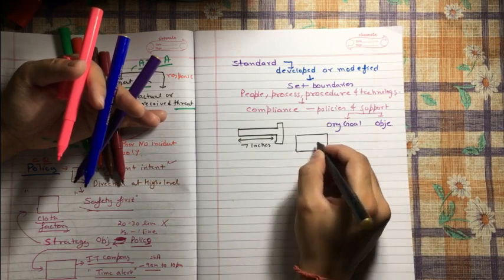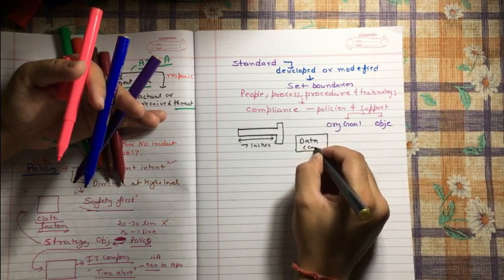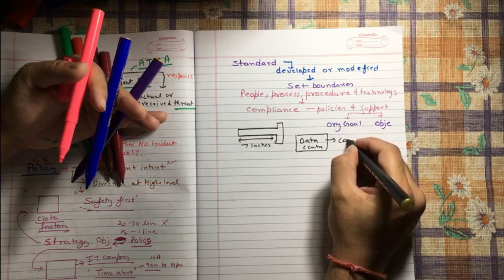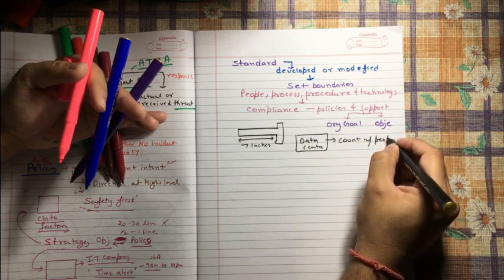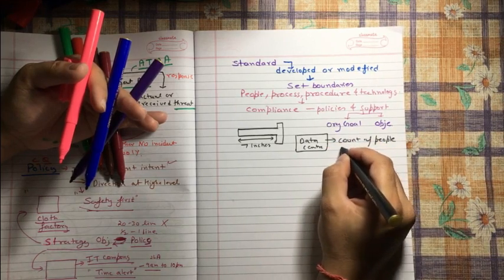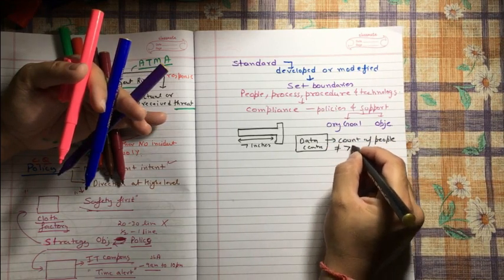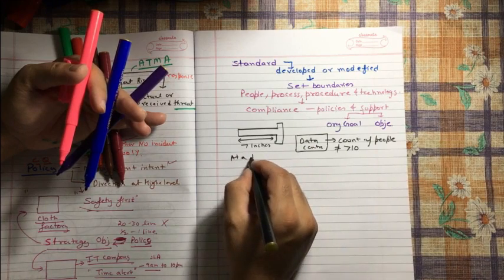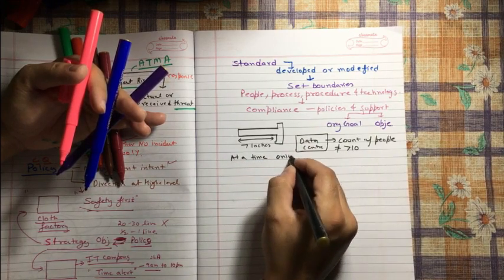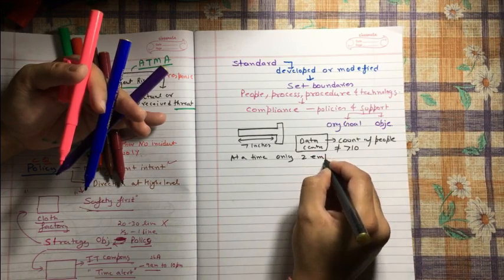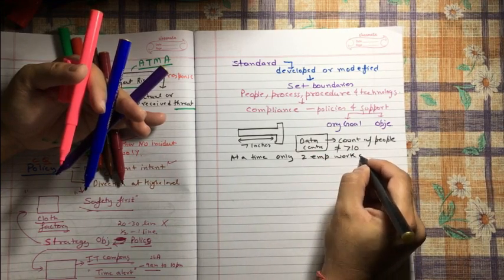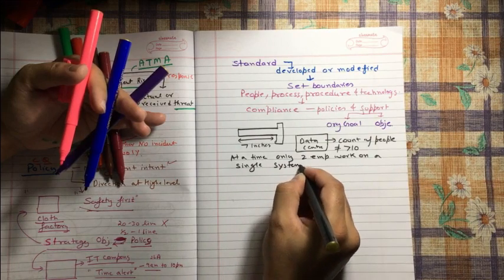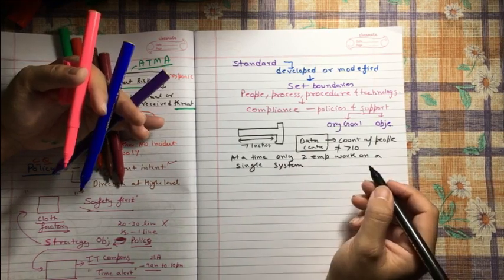There is a data center. There is a standard: a count of people inside this data center should not be greater than 10 at a time. Only two employees work on a single system. Let's say when we are establishing any infrastructure, something like that.